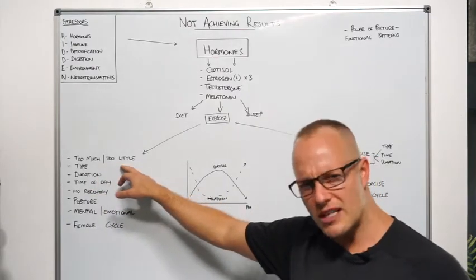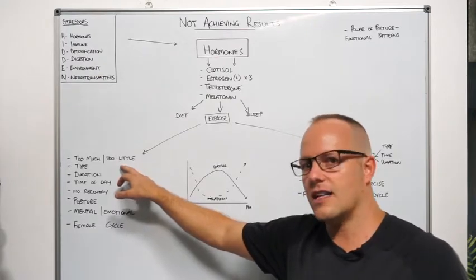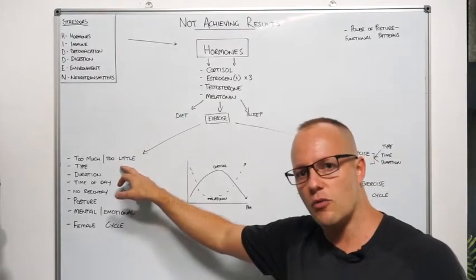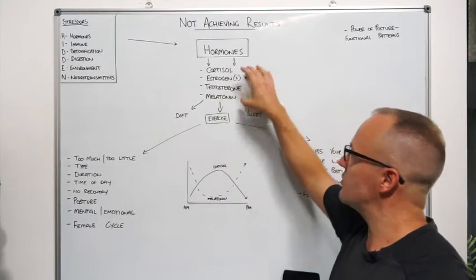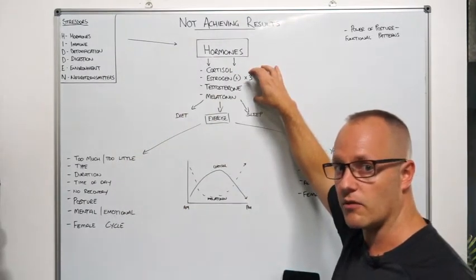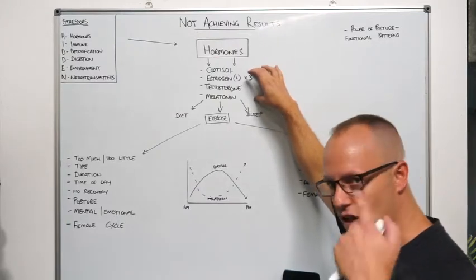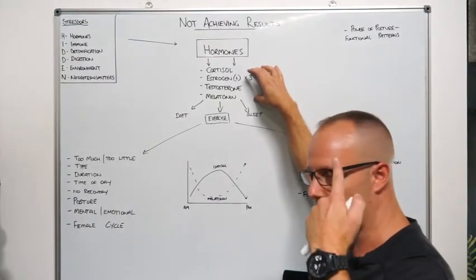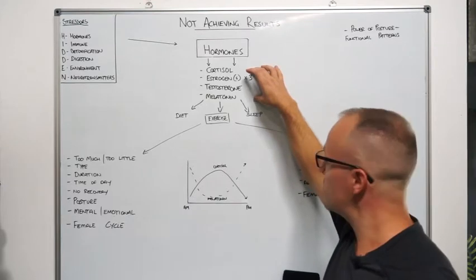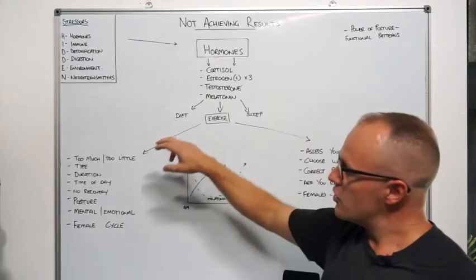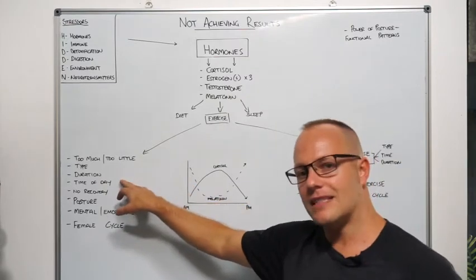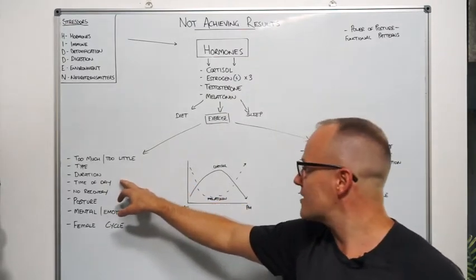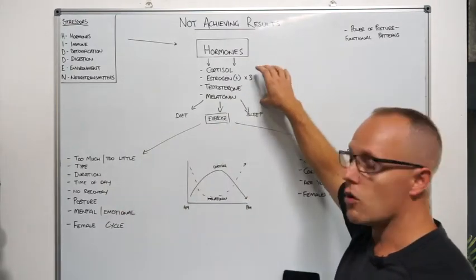When we're sleeping throughout the night, we're meant to have higher levels of melatonin. As we go through the day, it's meant to cycle through this circadian rhythm where they cross over. When we have too much exercise, if the type of exercise is really intense, like the high-intensity training or HIIT that's so popular, it will eventually create some issues.